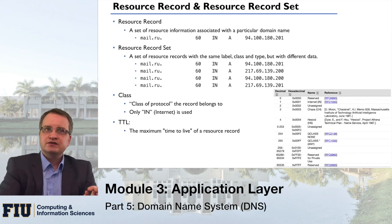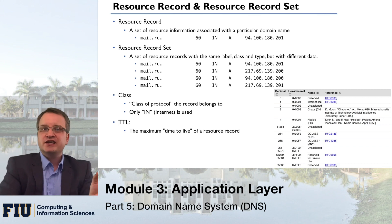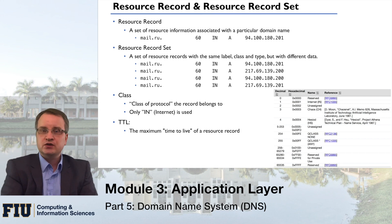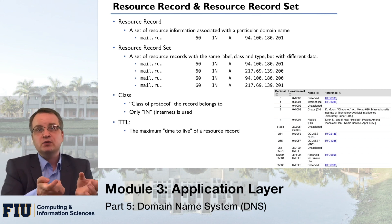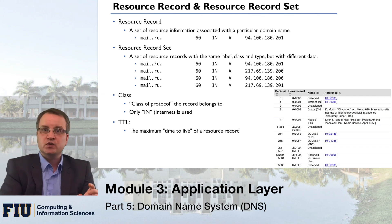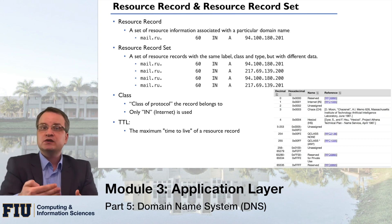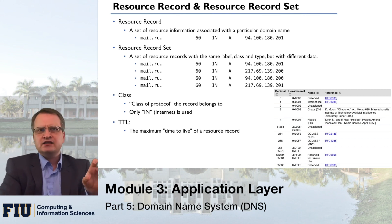An interesting property of DNS is that the identification of what you're requesting is the name plus the type, and within a name and type you can have multiple records — this is called a resource record set. For example, you can have multiple A records for the same domain name, as shown with mail.ru. In many cases, querying something like cs.fiu.edu will return multiple records. The class field in resource records is not really used today — we have only one internet class of records.